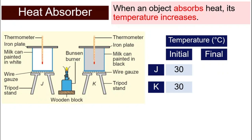And we will read the thermometer, we will read the temperature again for J and K. You will find that for J, it might go up to about 40 degrees. And for K, it will go up to 55 degrees Celsius.